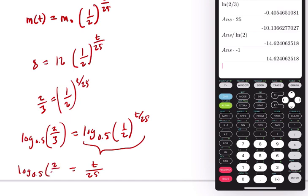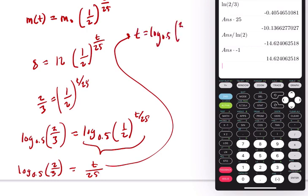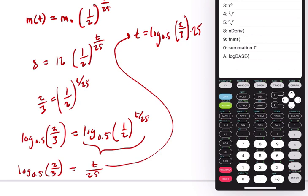This on the right here, this is just t over 25. It's just that exponent. Equals the log base 0.5 of two-thirds. So t equals the log base 0.5 of two-thirds times 25, and it should be the same thing.